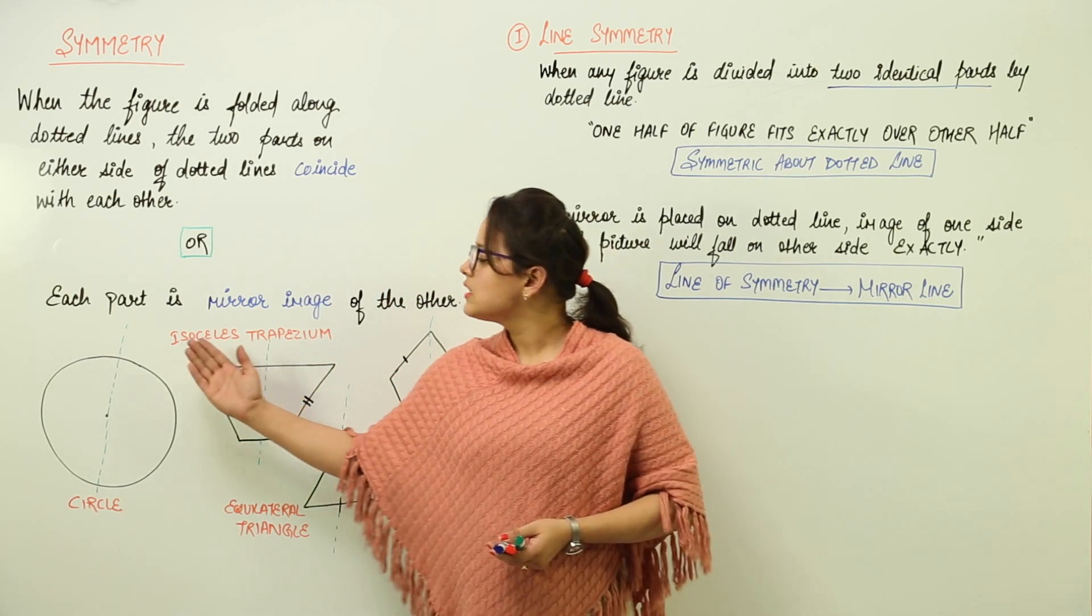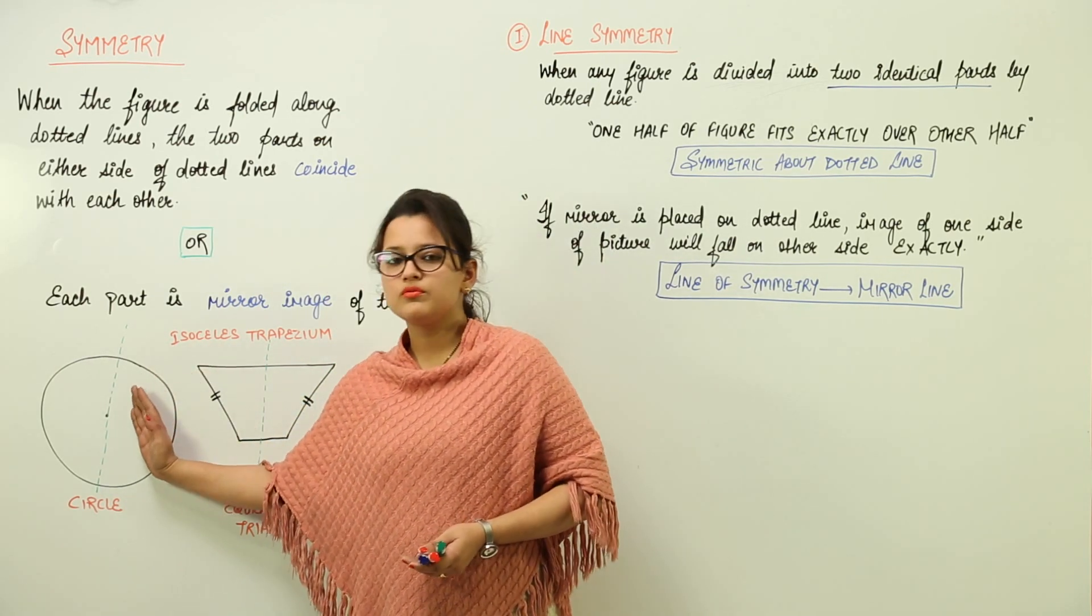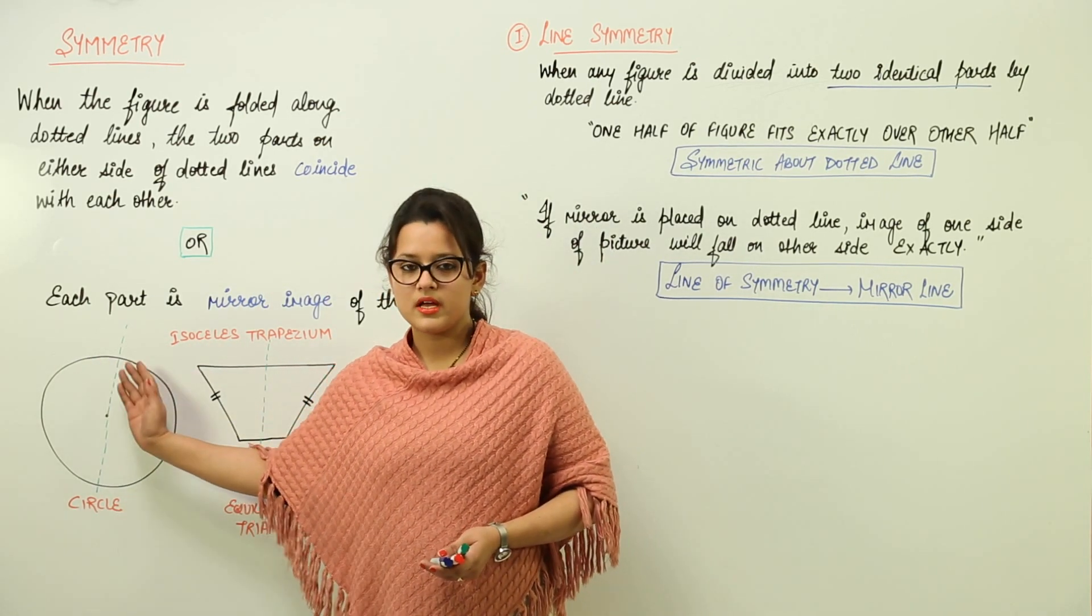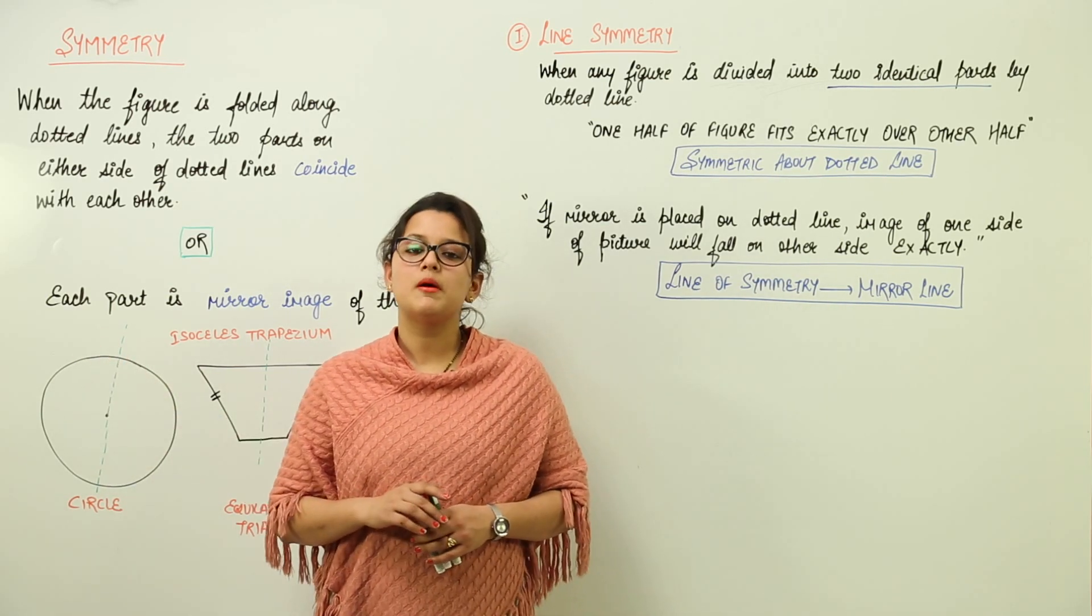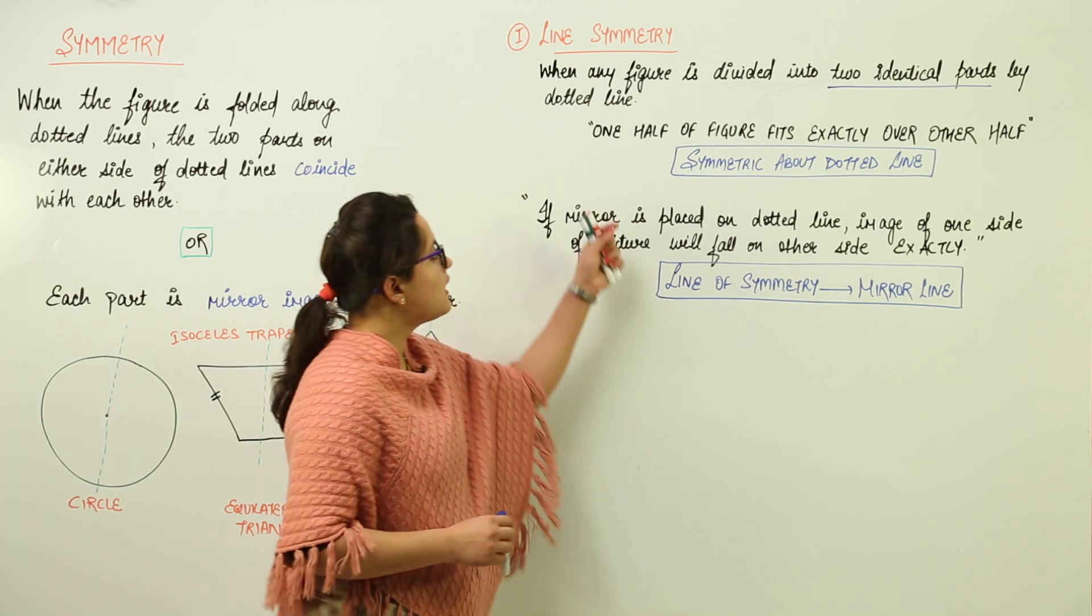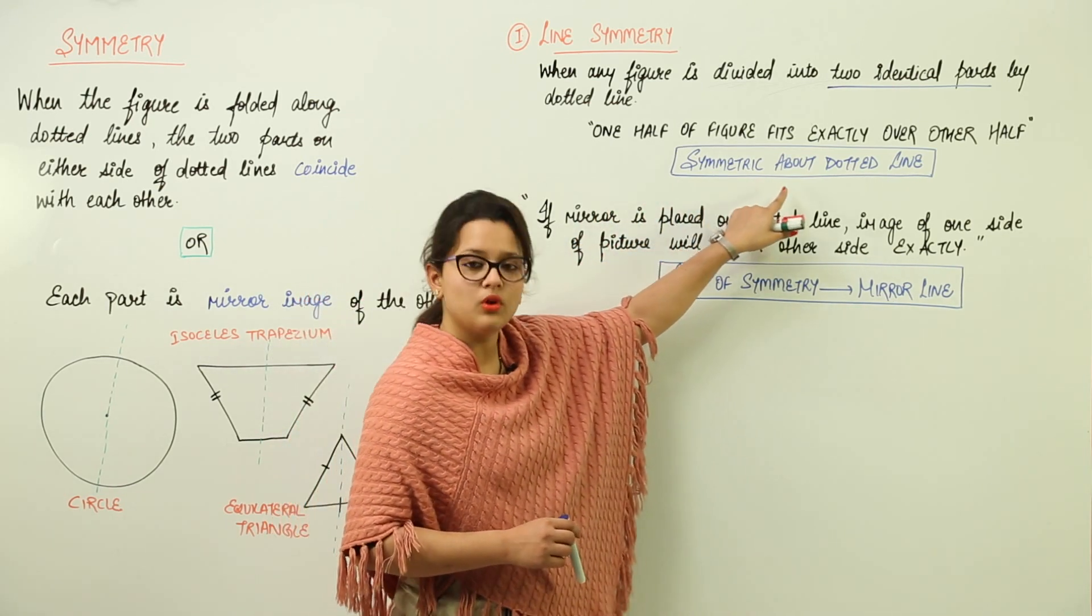As we discussed, one part of the figure fits the other part when you fold it. The one part is going to overlap the other part completely. Then we say that the figure is symmetric about the dotted line.